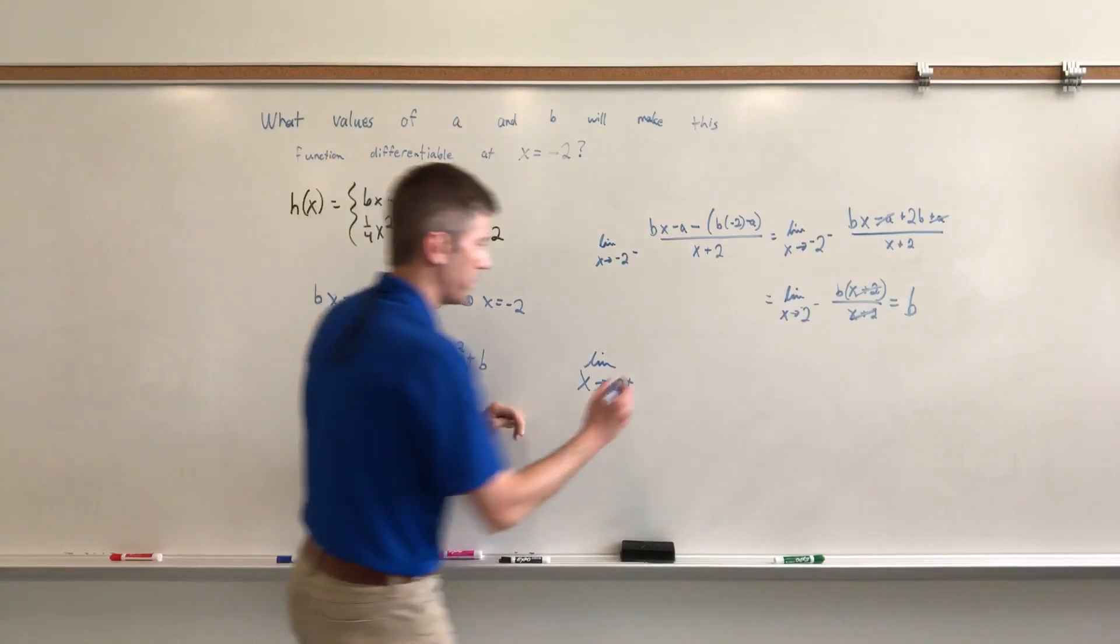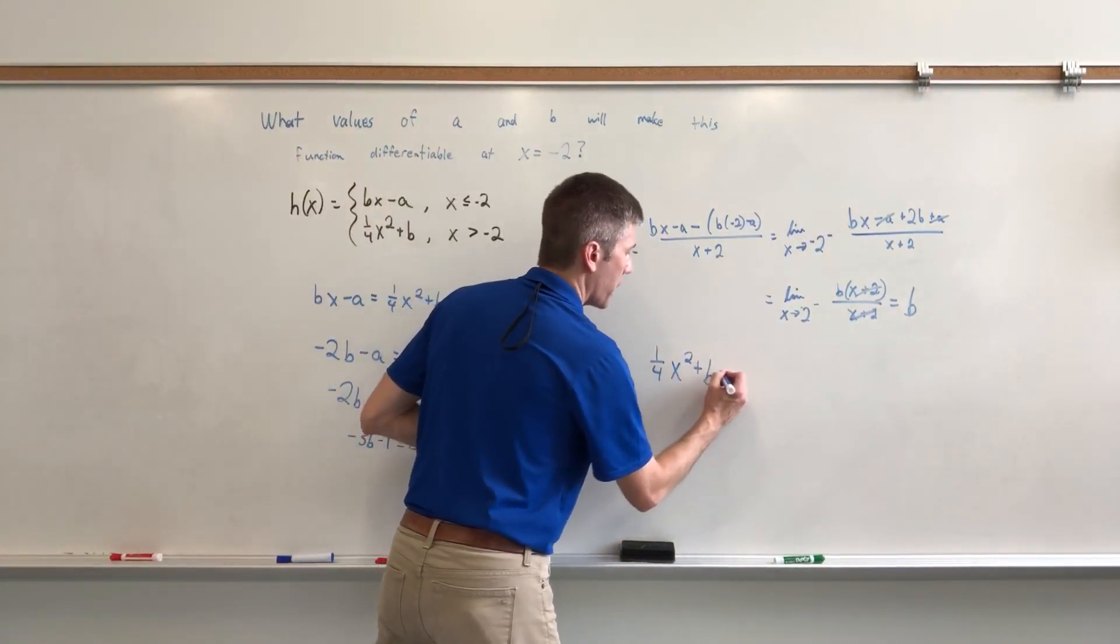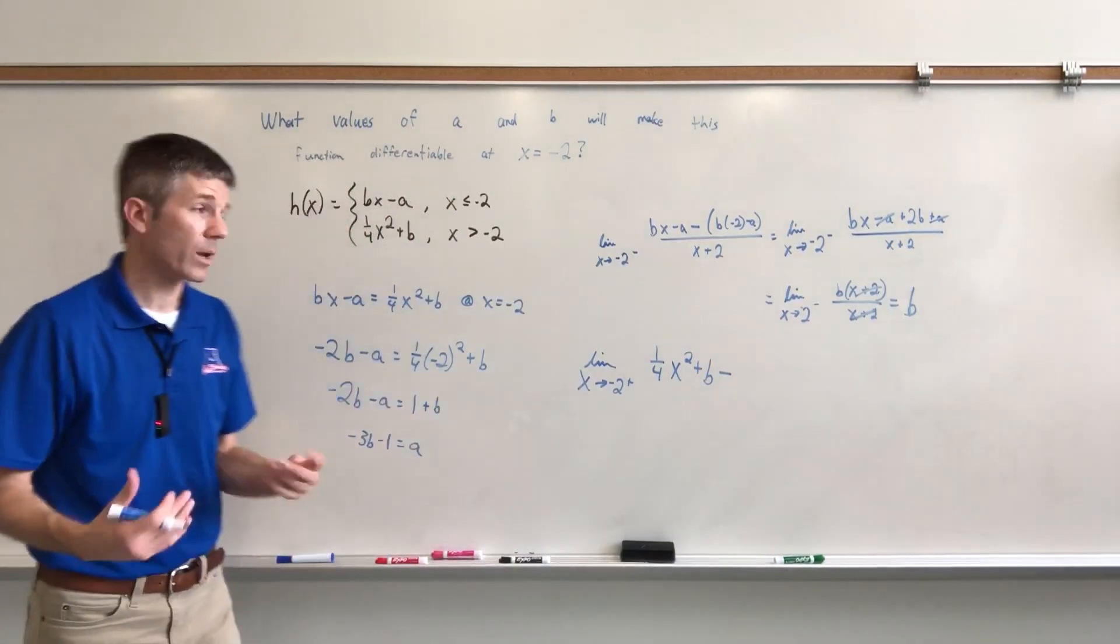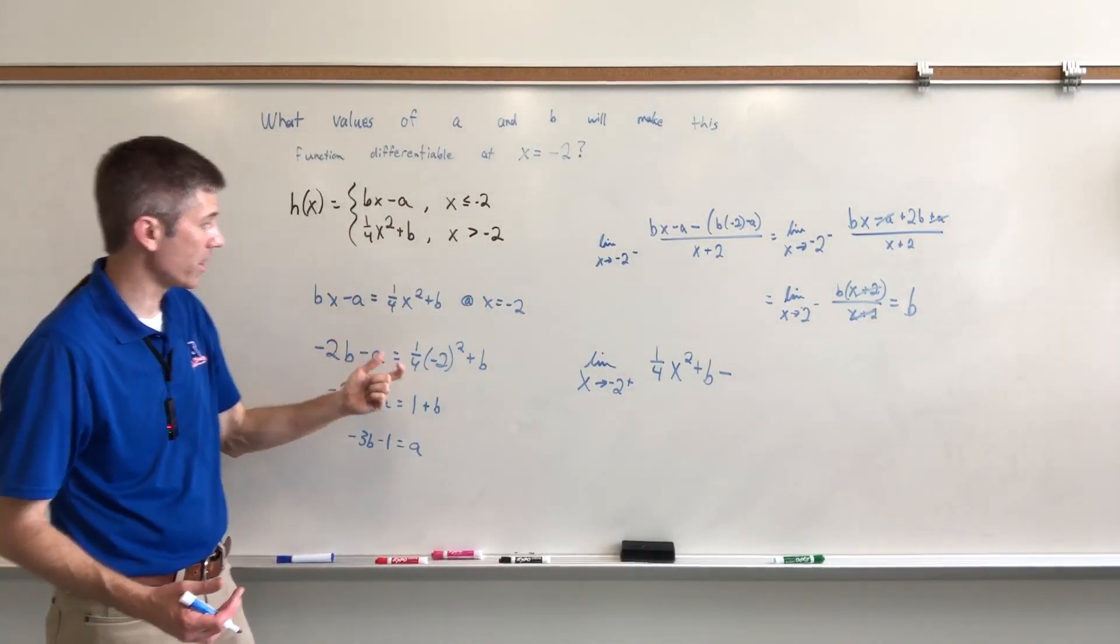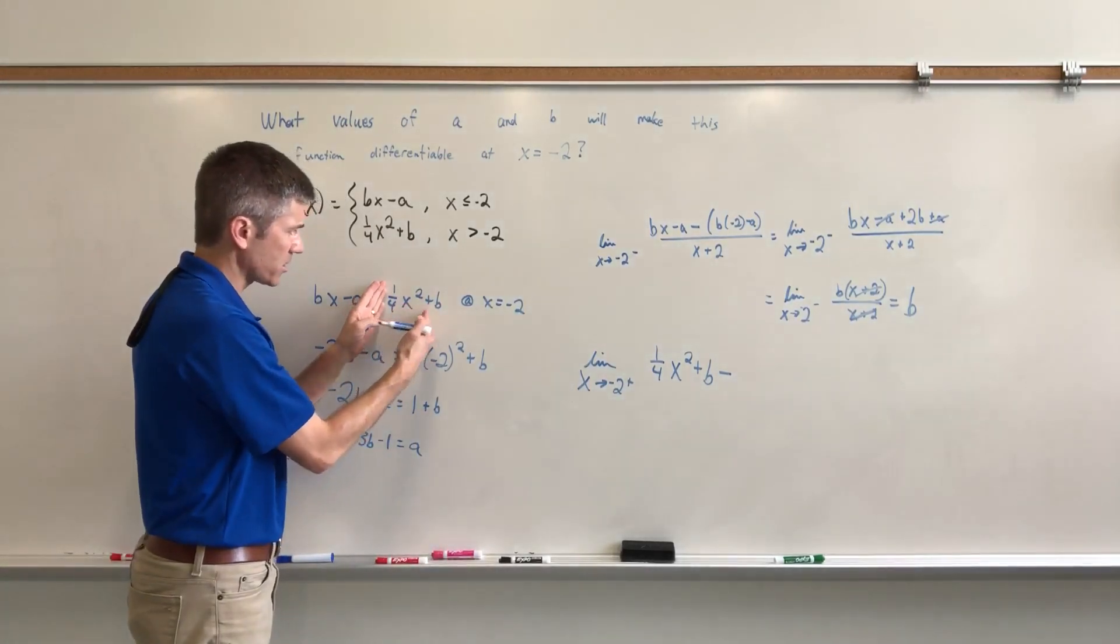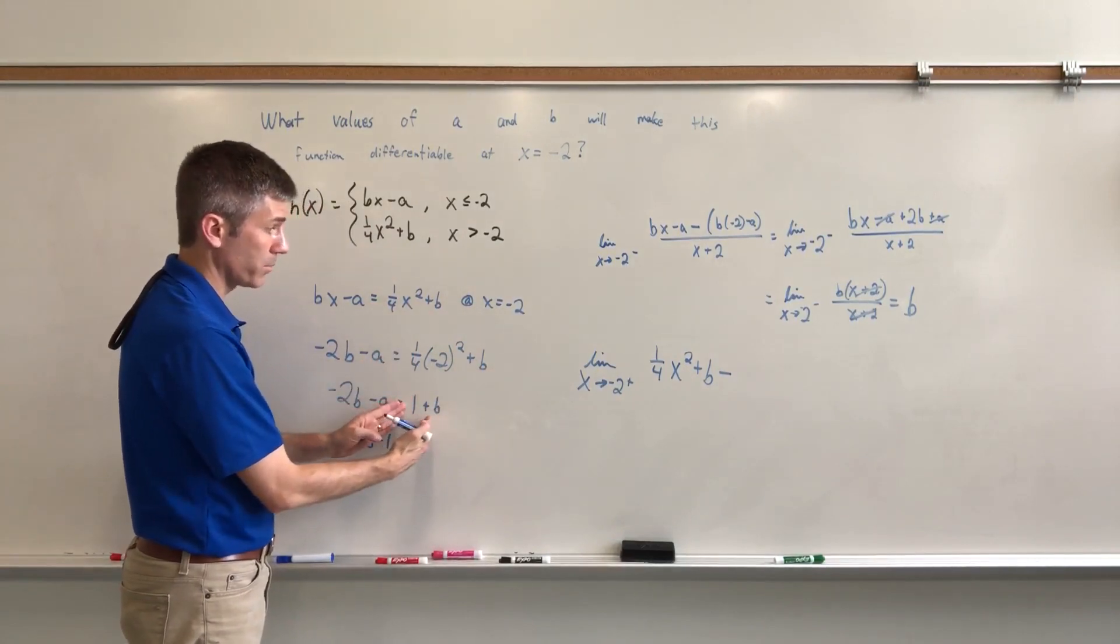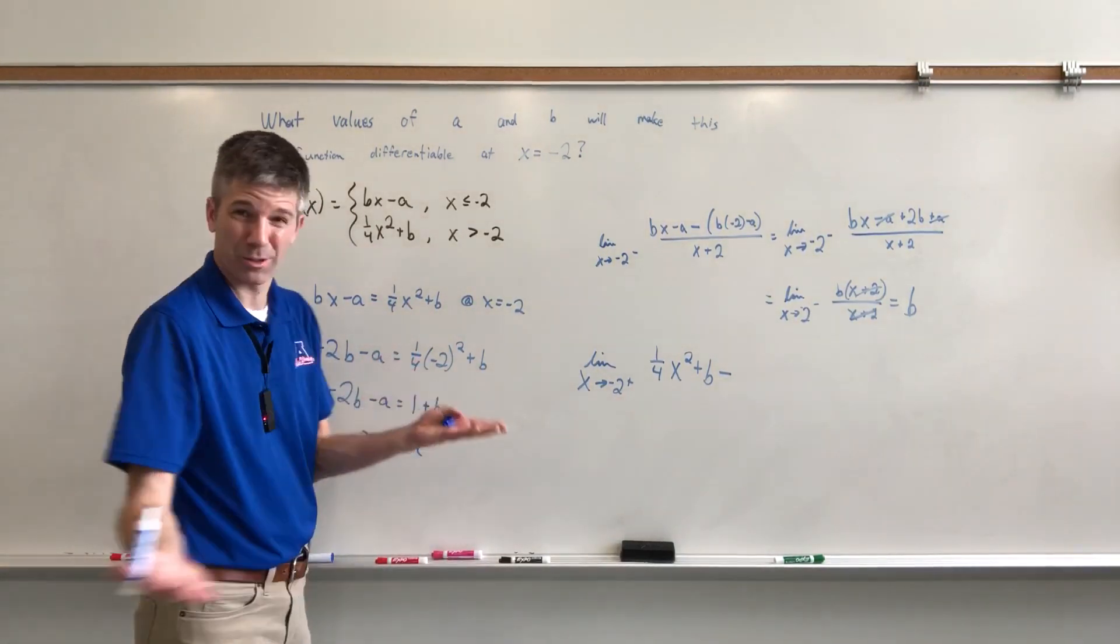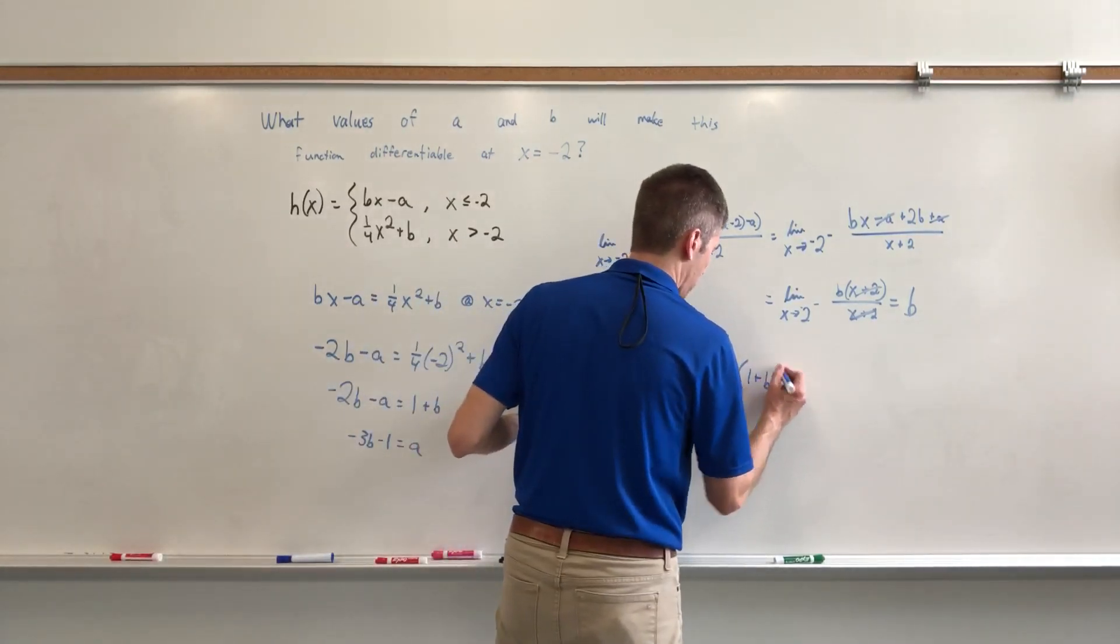So we're going to have one-fourth X squared plus B. One-fourth X squared plus B minus whatever I get when I plug a negative 2 in right here. And actually, we figured that out in this context. One-fourth X squared plus B when I plug in a negative 2 gives me 1 plus B. So let's just do that. Let's just save ourselves a step. 1 plus B. I'm standing in the way. But there you go. That's it.